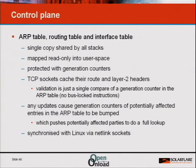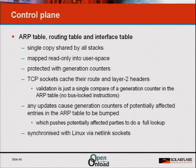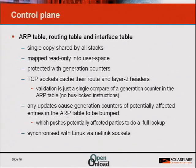If we make changes to the route table, that could have a knock-on effect on any number of TCP sockets, but we don't want TCP sockets to check the route table every time they send a packet. So if we change the route table, any ARP table entry that might have been affected gets its generation counter bumped. That forces the sender onto a slow path where it looks at the whole routing process from scratch. This information is kept up to date by synchronizing it with the Linux control plane using netlink sockets.